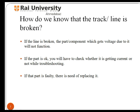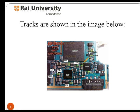Let us look at the method of checking whether a track line is broken or damaged because of some fault in the internal part of a mobile phone. If the line is broken, the component which gets voltage due to current flow is broken. If any part where voltage and current does not pass or is not getting power supply, it means that part is faulty and needs replacing.